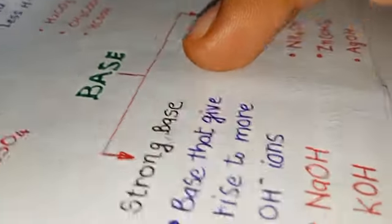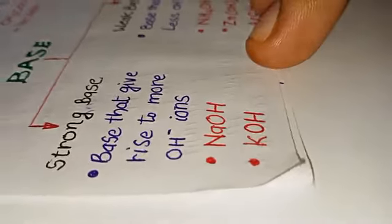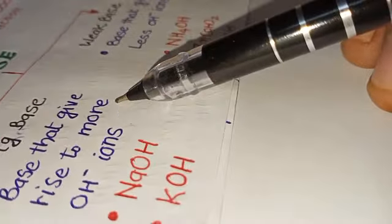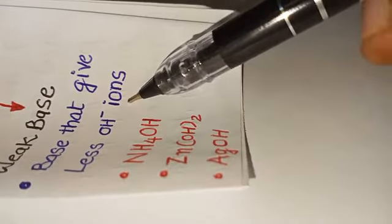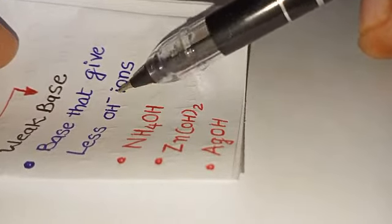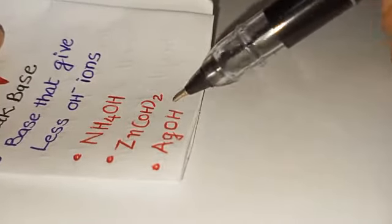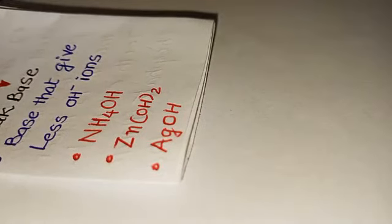Weak acids are acids that give fewer H+ ions — examples are carbonic acid, acetic acid, and methanoic acid. Bases can also be of two types: strong bases and weak bases. Bases that give rise to more OH- ions are known as strong bases — NaOH and KOH are examples. Weak bases give fewer OH- ions — examples are NH4OH, Zn(OH)2, and AgOH. Happy learning!